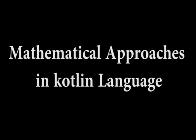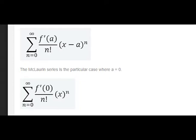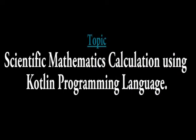Mathematical approaches in Kotlin programming language. The way computers calculate trigonometric functions are approximations made using the Taylor series. The Maclaurin series is the particular case where A equals zero. Based on this series are generated the geometric series that give rise to the calculations of trigonometric functions.